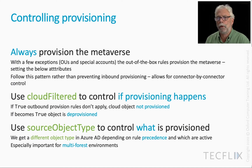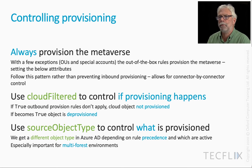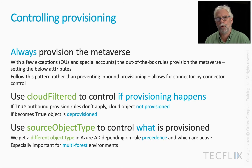Let's talk about how we go about controlling the provisioning action. The first rule is to always provision to the metaverse — though 'always' has exceptions. With OUs and certain special accounts, we don't bother putting them into the metaverse because we can never conceive of provisioning an account based on them. However, for most users, the out-of-the-box rules do provision the metaverse and set some key attributes. The suggestion is to follow this pattern rather than preventing inbound provisioning, as it allows for connector-by-connector control.